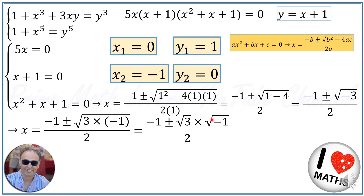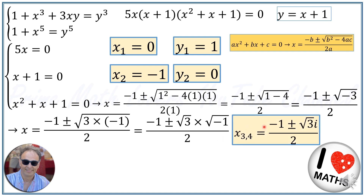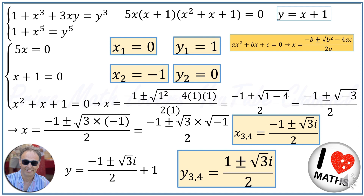We can write this as minus 1 plus or minus the square root of 3 times the square root of minus 1 over 2. Since the square root of minus 1 is the imaginary unit i, the two complex roots are x equals (minus 1 plus or minus √3·i) over 2. Since y equals x plus 1, the corresponding y values are y equals (1 plus or minus √3·i) over 2.